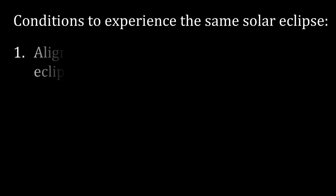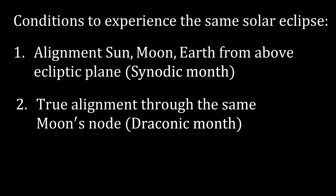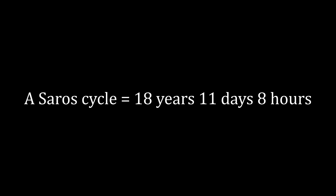To experience the same solar eclipse on Earth, three things need to align simultaneously. First, the Moon needs to be aligned between the Sun and the Earth from above the ecliptic plane. Second, the Moon needs to be truly aligned, reaching its node — which occurs every draconic month. Third, to block the same amount of sunlight, the Moon needs to be at the same distance from Earth, which happens every anomalistic month. When all three events occur simultaneously, you have the same type of eclipse as before, and this repeats every Saros cycle — approximately 18 years, 11 days, and 8 hours.